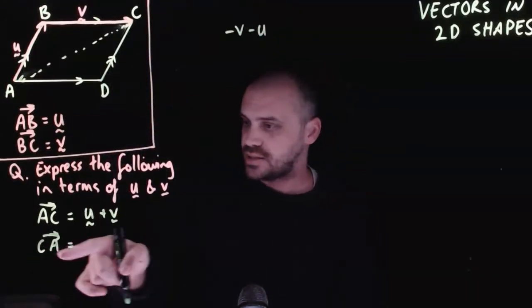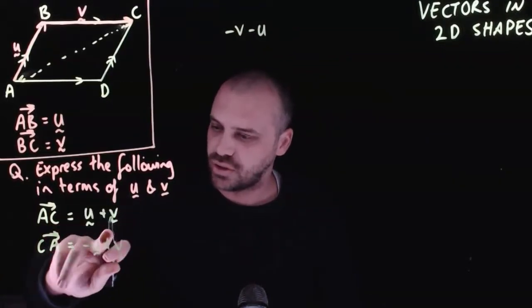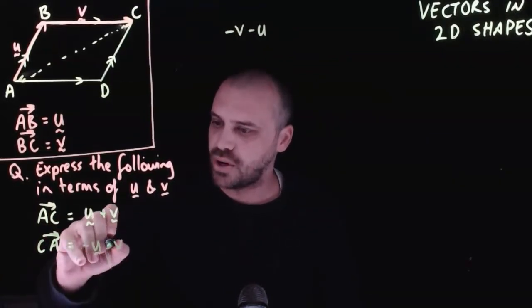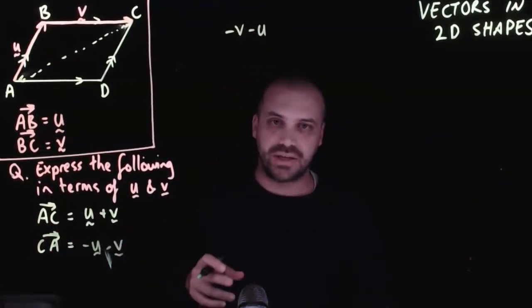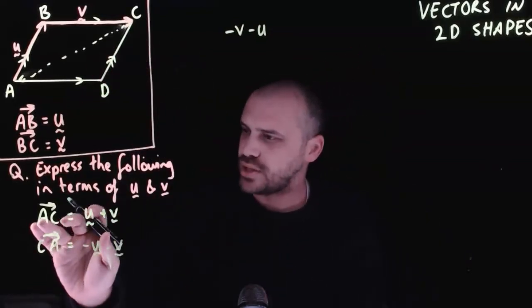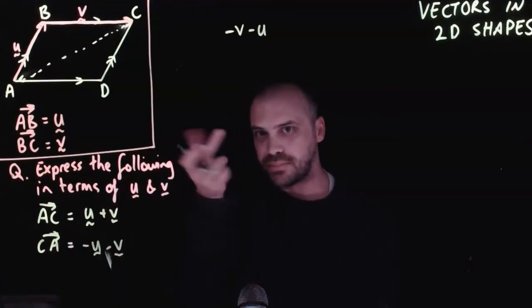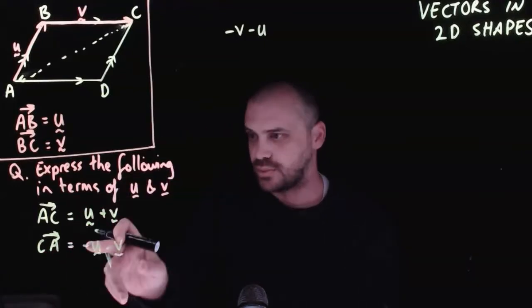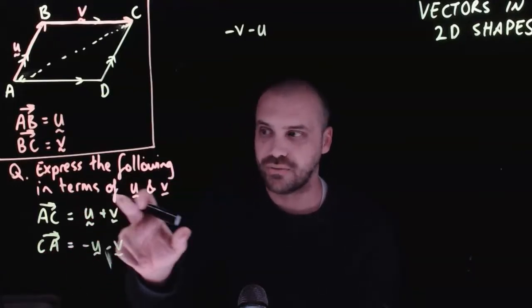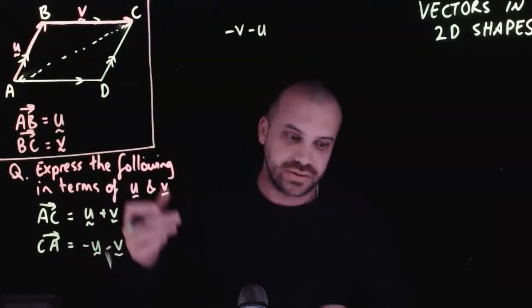And that's our answer. CA equals negative U minus vector V. Rather than reasoning it out like I did there, I knew that AC was U plus V. So CA must be the reverse of that, which is going to be the negative of that. Multiply the whole thing by negative. You'll get negative U minus V.